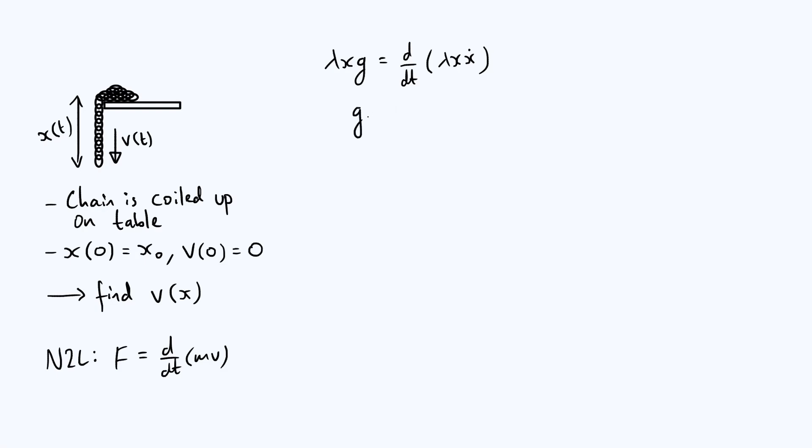I'm just going to write the left hand side as gx, and then we'll use the product rule to expand out the right hand side. So if we differentiate the x, we get ẋ, and then there's another ẋ, so it's ẋ². Then we leave the x and we differentiate the ẋ, so our second term is going to be x times ẍ.